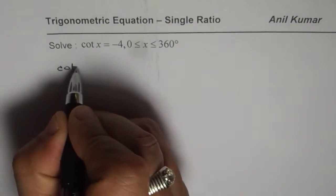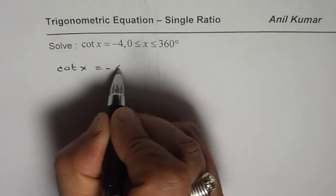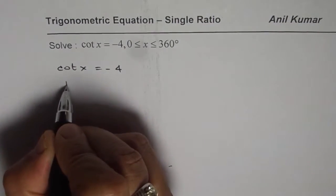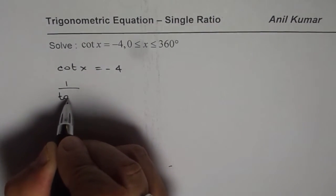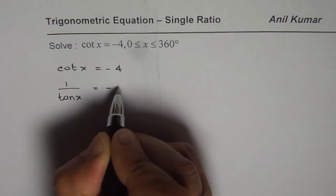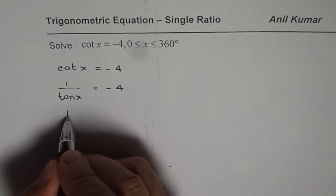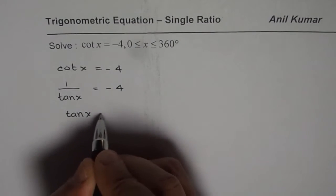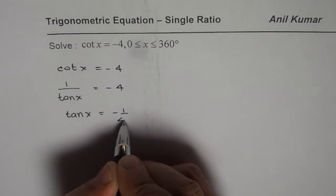Cot x, let me write down, cot x is equals to minus 4. Cotangent is 1 over tan. So 1 over tan x is equals to minus 4, which I can write as tan x equals to minus 1 over 4.